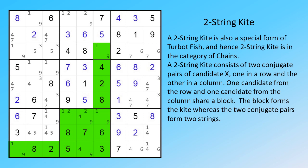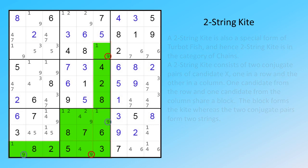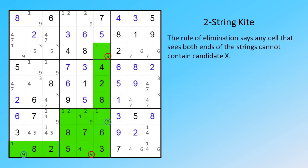A two-string kite is also a special form of turbot fish, and hence two-string kite is in the category of chains. A two-string kite consists of two conjugate pairs of candidate X, one in a row and the other in a column. One candidate from the row and one candidate from the column share a block. The block forms the kite, whereas the two conjugate pairs form two strings. The rule of elimination says any cell or cells that see both ends of the strings cannot contain candidate X.